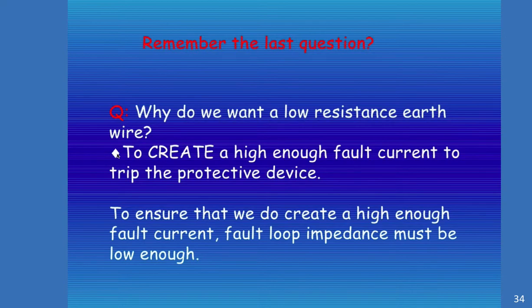Now we want to create a high enough fault level that the protective device operates. But we don't want to cause such a high level of fault that you actually damage the device. You can actually go too far the other way. So we want enough current that the device trips within a specified time, and that we don't actually create so much fault current that the device can't cope with it. So we need to ensure that we do create a high enough fault current or fault loop impedance must be of a low value.